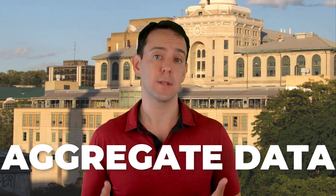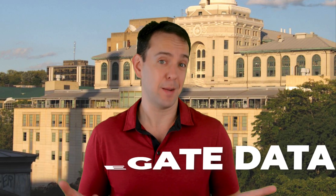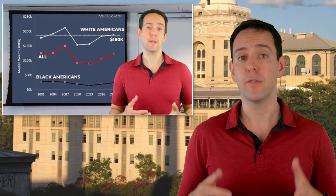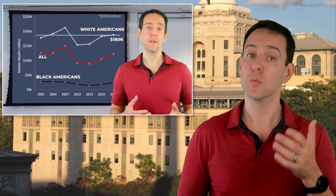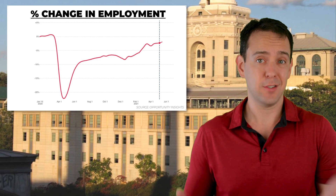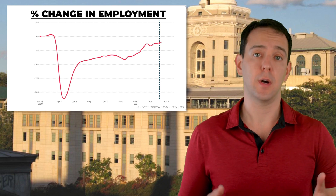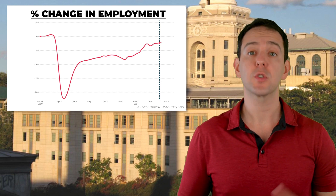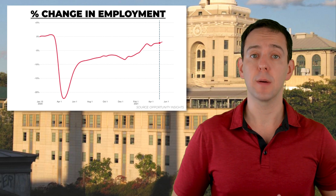The problem with this type of analysis, however, is that it masks the reality of what's actually going on. This is a form of aggregate data that hides the nuances of something as complicated as an economic recovery. I have another video on how disaggregating data can yield important insights into racial wealth gaps. But the basic idea is the same: when you aggregate data like this chart does, you hide what's going on for different types of people, which is where the idea of a K-shaped recovery comes in.